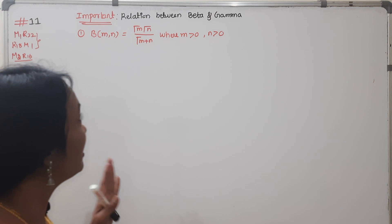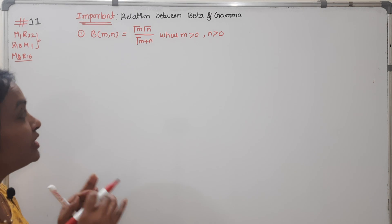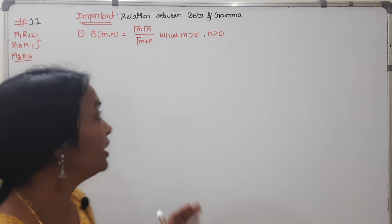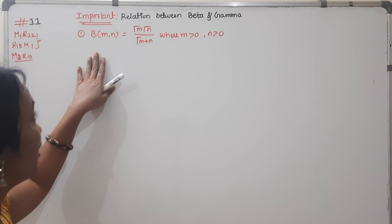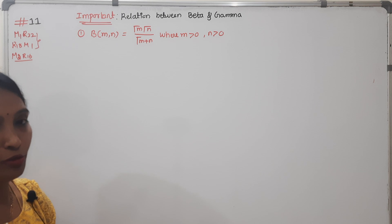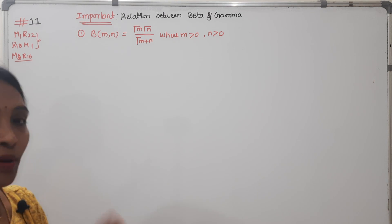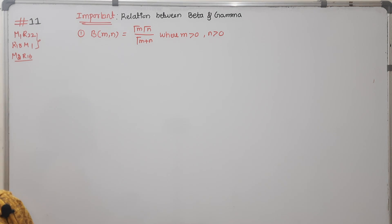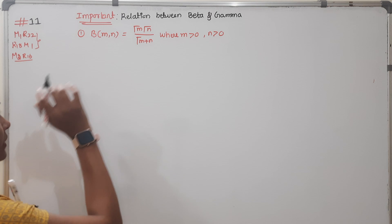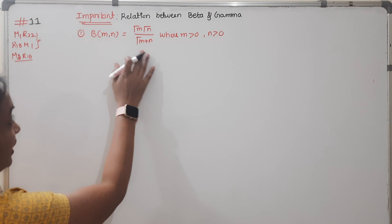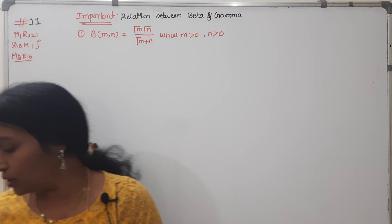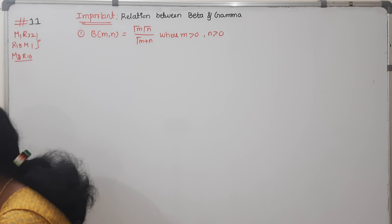Now we are starting. First, if you have any problem that is unclear, don't worry about the Beta part. Just understand the Beta. I am going to give you the Beta relation. This is the best relation — I will repeat this.